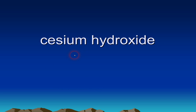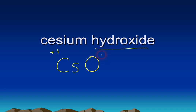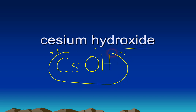Next example: cesium hydroxide. Cesium is Cs with a positive one charge. Hydroxide is a polyatomic ion — OH — found about halfway down the right side of the ion chart, with a negative one charge. The absolute values of the charges are equal, so they cancel out and we are done. The answer is CsOH.